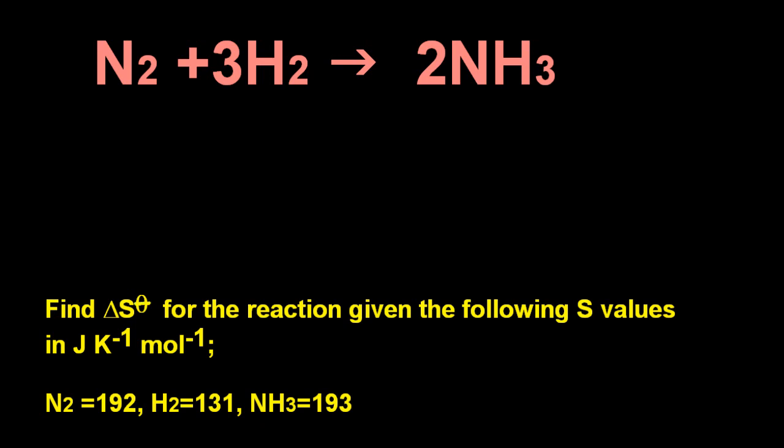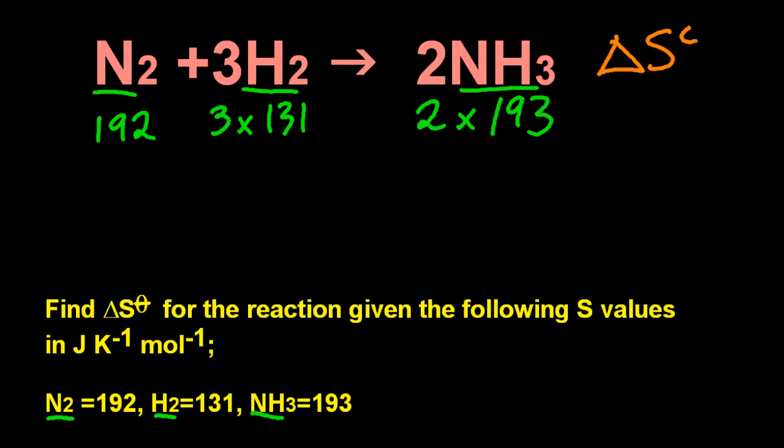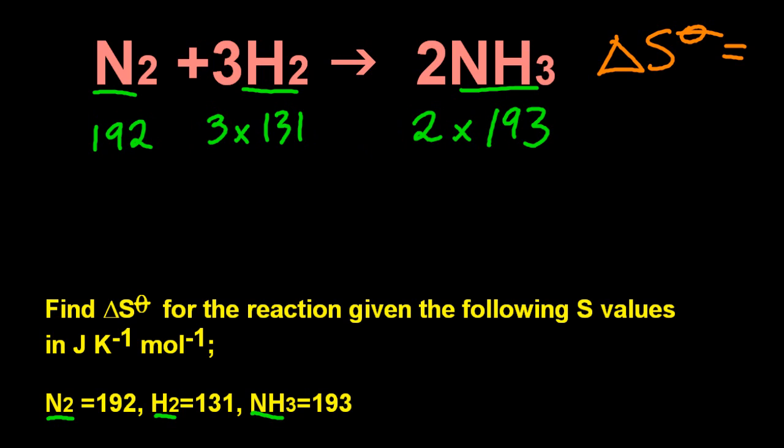So find delta S. Just going to put the numbers in, making sure I take account of the coefficients. And just do products minus reactants. Oh, that was clever. It gives me minus 199. If you forget what the units are, then they're probably in the question, and they're definitely in the data booklet.